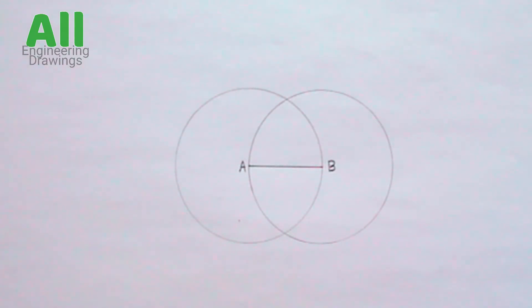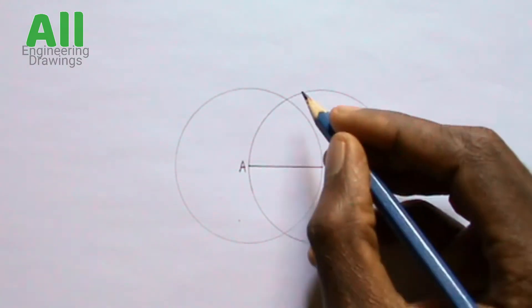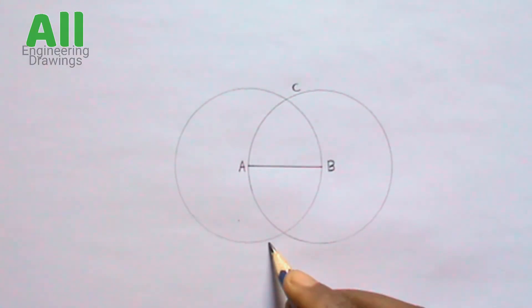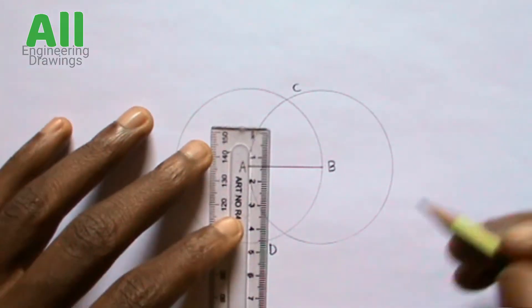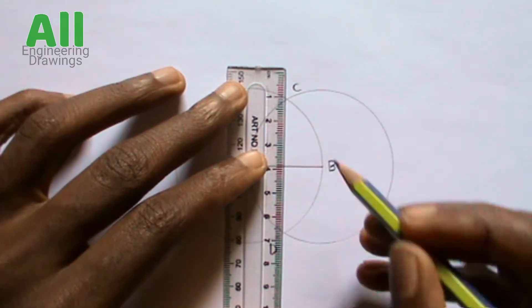Now label the points where the circles intersect. Draw a line passing through point C and point D, that is the point where the circles intersect.